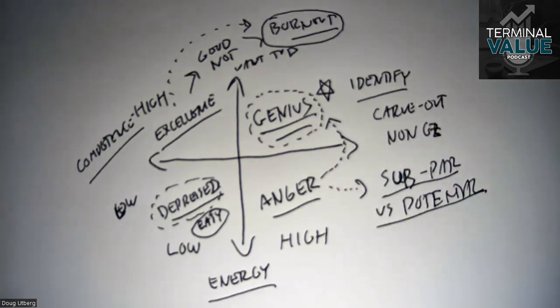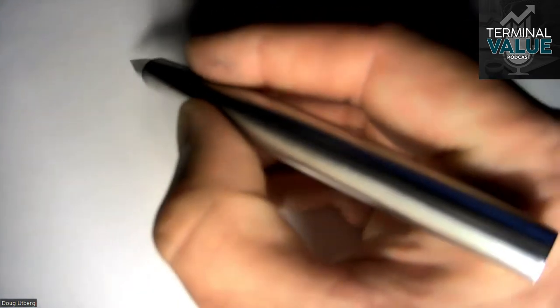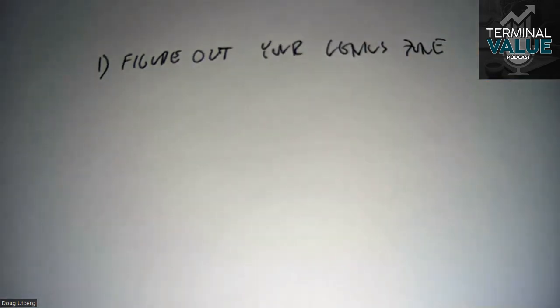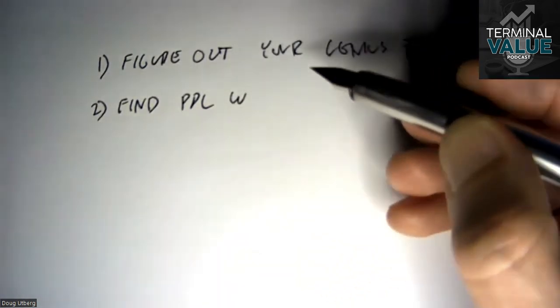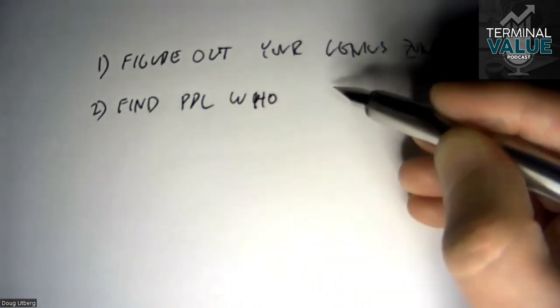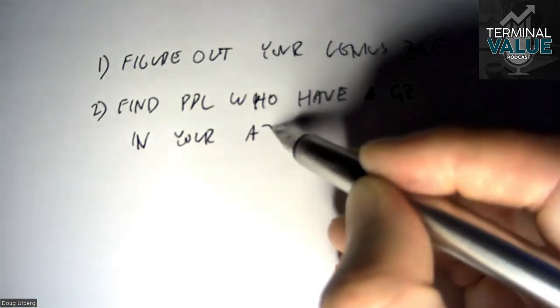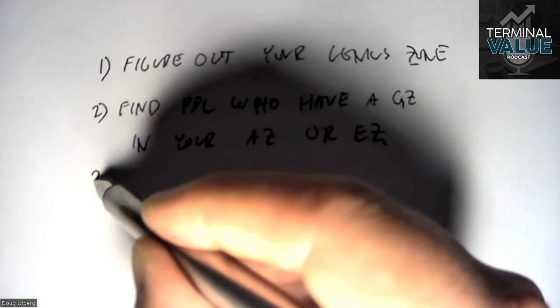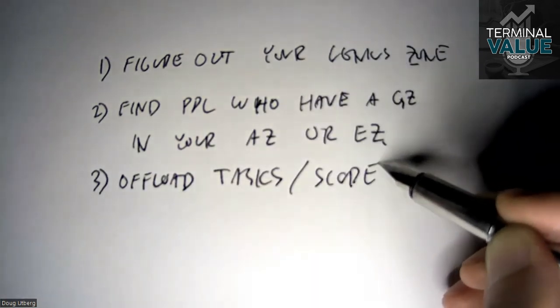The thing we all really need to do as leaders is: step one, figure out your genius zone. Step two, find people who have a genius zone that is in your excellence or anger zone. And step three, offload tasks or scope to these people.